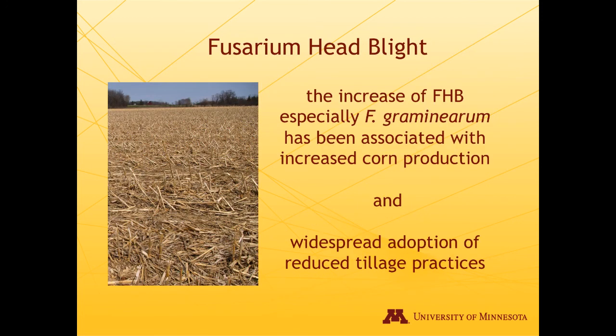The widespread adoption of reduced tillage practices — undertaken largely to prevent soil erosion — occurred in the 1980s and was driven by the dry period where conserving soil moisture was critical. This undoubtedly left a lot more residue on the soil surface. Corn leaves more residue per unit area than other crops, and that residue breaks down more slowly because the physical size of the material resists decomposition.